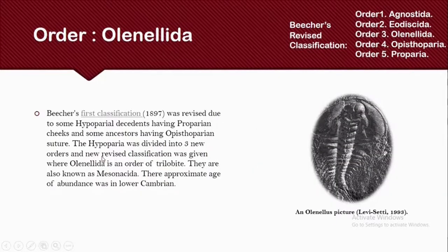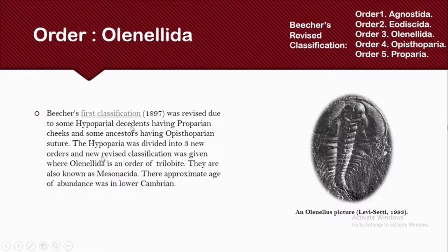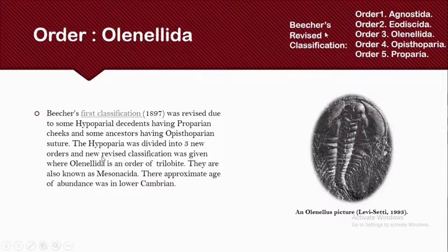Then, Olenellida. Another classification for trilobites was given by Beecher. Beecher's first classification was given in 1897, done on the basis of the orientation of the facial suture and the marginal area that the free cheek and pre-cheek area covers. In this basis, there were three orders given by Beecher: hypoparia, opisthoparia, and proparia. Some hypoparian descendants had proparian cheeks and some hypoparian ancestors had opisthoparian sutures, creating controversy. In 1901 this classification was revised and the hypoparia order was divided into three orders: Agnostida, Corynexochida, and Olenellida. Olenellida is also known as Mesonacida, and their approximate age of abundance was in the lower Cambrian.